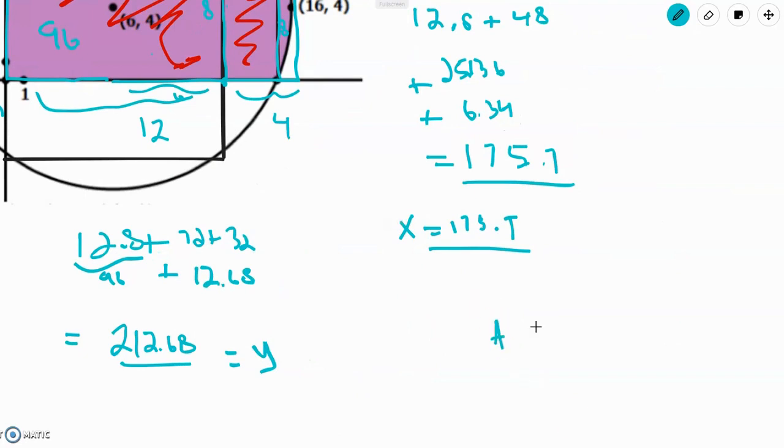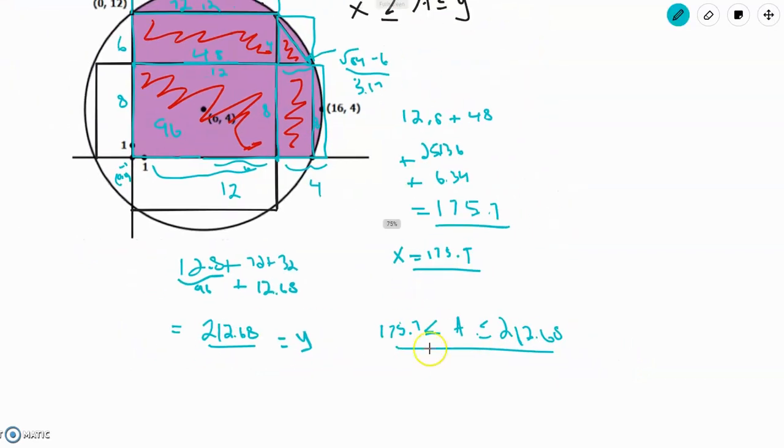So now we have that a is less than or equal to 212.68 and greater than or equal to 175.7. So we've bounded this region.